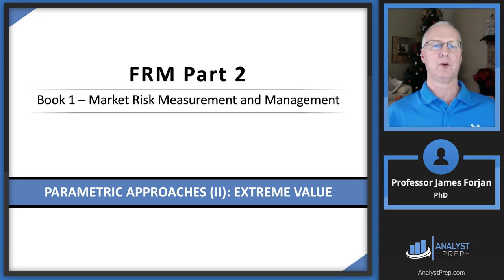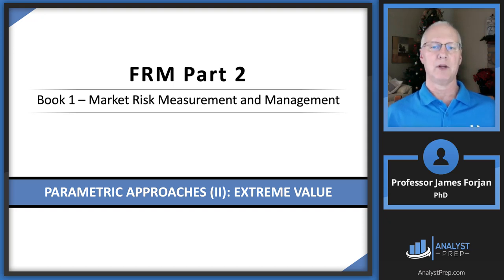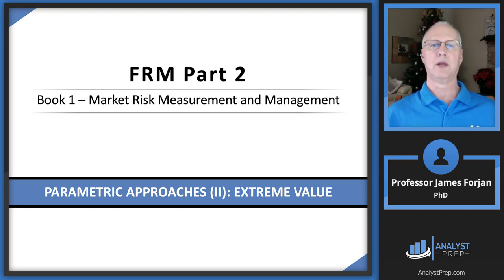This is FRM Part Two, Book One: Market Risk Measurement and Management, covering the chapter on parametric approaches and extreme value theory. For those of you who have looked at this chapter, you might find it a little daunting, but hopefully by the end of this slide deck you'll find it's really just an extension of some things we've been talking about in previous chapters.